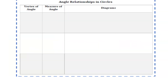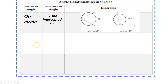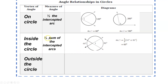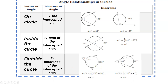Here's a summary of all the angle relationships. If the vertex is on the circle, we use half the intercepted arc. If the vertex is inside the circle, we use half the sum of the arcs. If the vertex is outside the circle, we still use half, but it's half the difference of the intercepted arcs. Please pause and write this down — it's an overview of everything covered in this chapter.